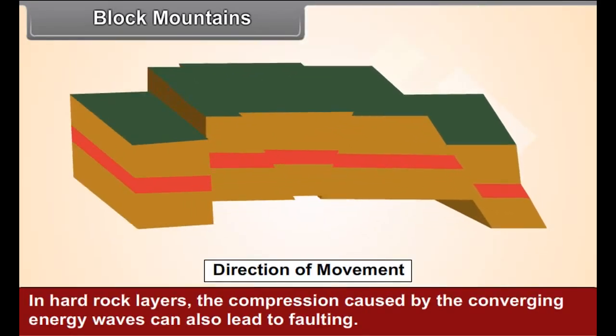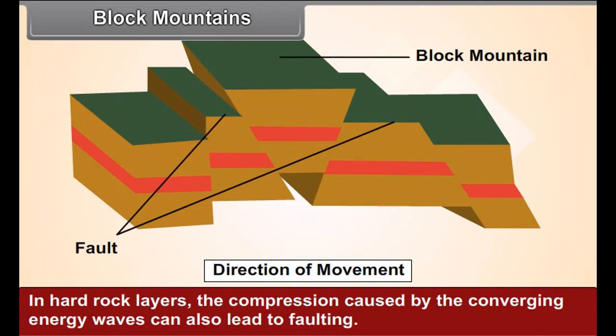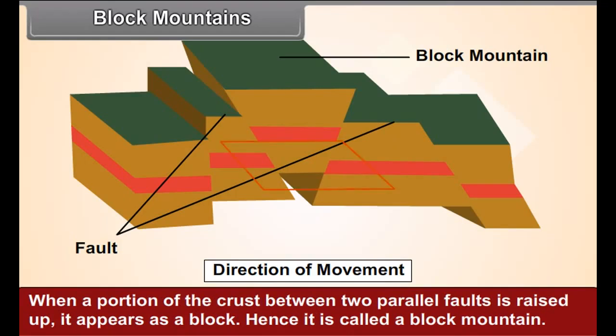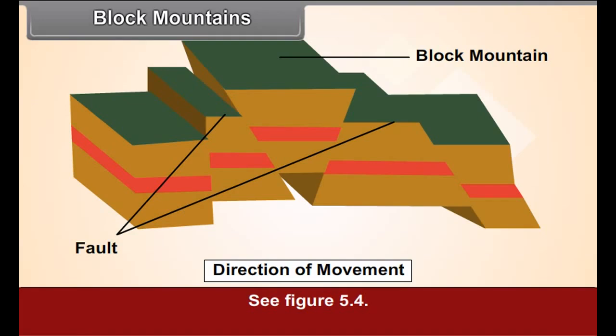In hard rock layers, the compression caused by the converging energy waves can also lead to faulting. When a portion of the crust between two parallel faults is raised up, it appears as a block. Hence, it is called a block mountain. See figure 5.4.